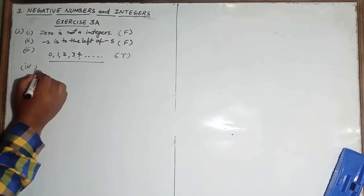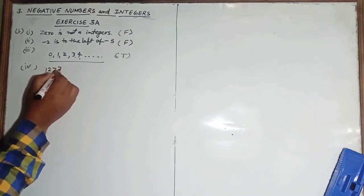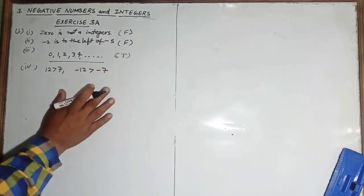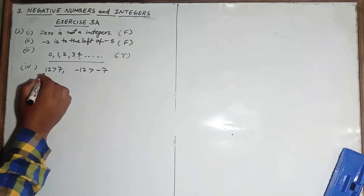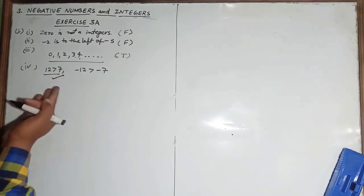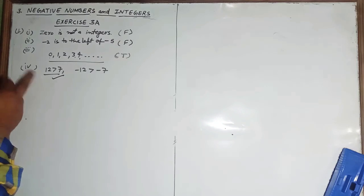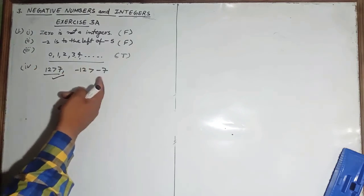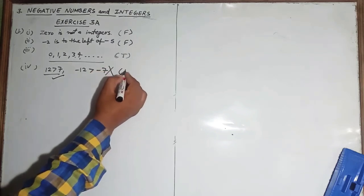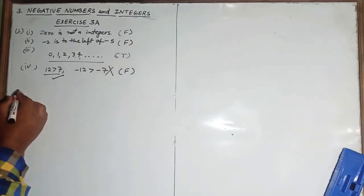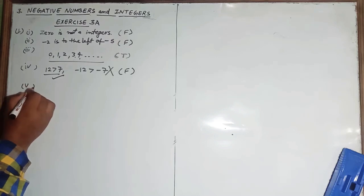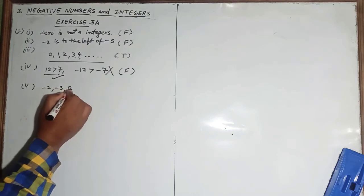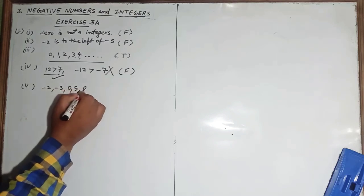Fourth part: 'Since 12 is greater than 7, therefore minus 12 is greater than minus 7.' Is it true or not? Positive numbers having greater value are greater, but for negative numbers, the one with lesser absolute value is greater. So this statement is wrong — false is our answer.